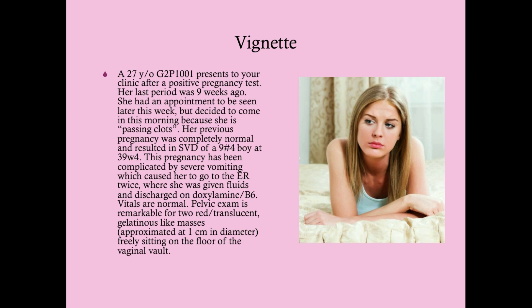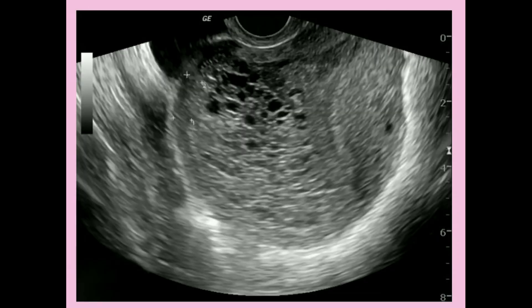One of the more important things we want to rule out, because of what we see in the vaginal vault, is a molar pregnancy. When you have a molar pregnancy, one of the things that can happen is you get these hydropic villi that are passed, and these red translucent gelatinous-like masses are usually what show up. We can't diagnose this as a molar pregnancy until we get an HCG level and do an ultrasound, but those would be our next step. On ultrasound, this is called the cluster of grapes sign — these are translucent hydropic villi inside the uterus.